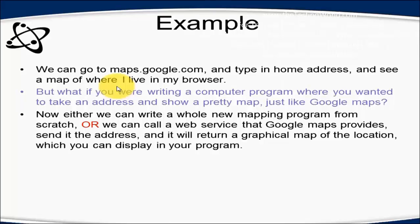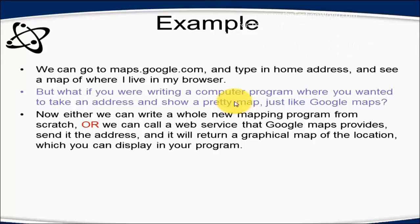Now I am taking the example of Company A, which wants to develop similar mapping functionality as Google is providing. One way is to write the computer programs separately which will take input from the user and show the map. But another approach is to go to Google, take their licenses, and have my application — written in any programming language — interact with the Google web service. The advantage is that we do not need to write the same code that Google has already written. Writing that same code could take one or two years, or maybe more.